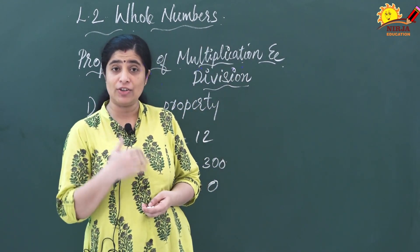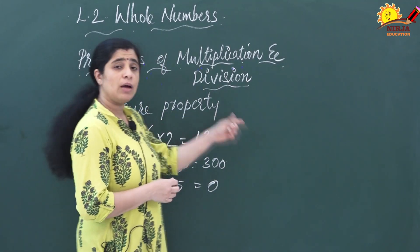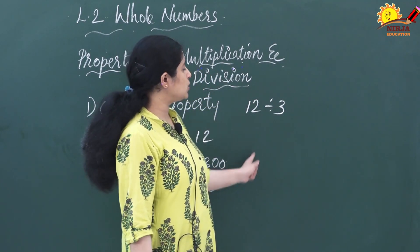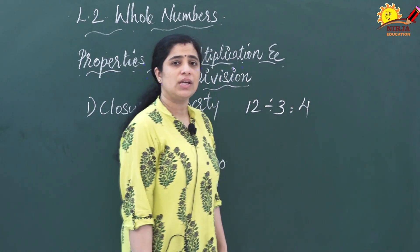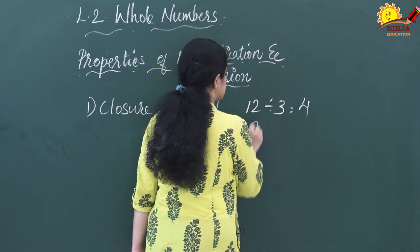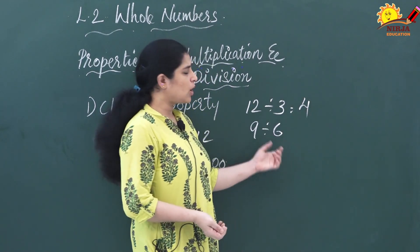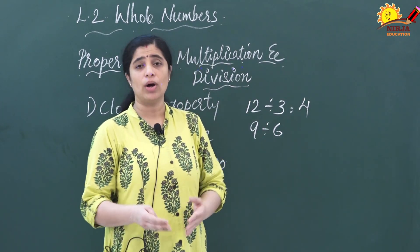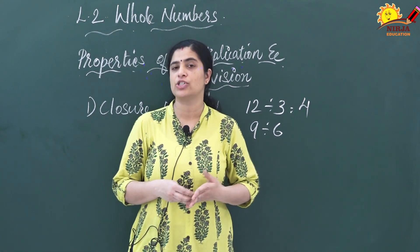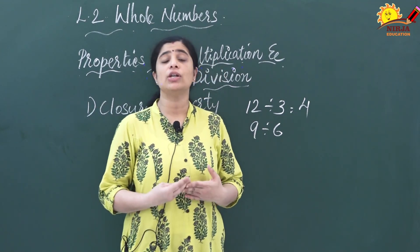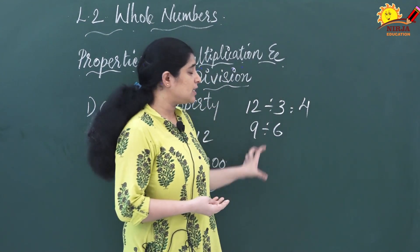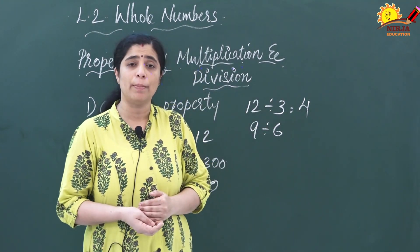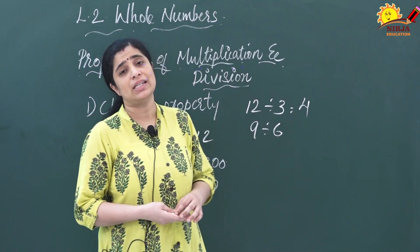Now we will check closure property for division. I am going to take one example: 12 divided by 3. What will you get? Yes, you are getting 4, which is a whole number. Now I am going to take 9 divided by 6 — can you divide 9 completely by 6? No. You will get the answer in decimal or in fraction form, and decimals and fractions are not whole numbers. So division does not satisfy the closure property. Multiplication satisfies but division does not.